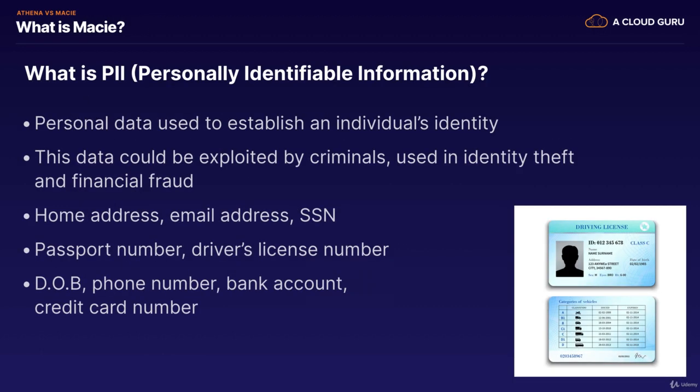Now that we know what Athena is, what is Macie? Let's start with what PII is first. PII is personally identifiable information — information that's used to establish a person's identity. This data could be exploited by criminals and used in identity theft or financial fraud. Examples of PII include your home address, email address, social security number, passport number, driver's license number, credit card numbers, date of birth, phone number, and bank account number.